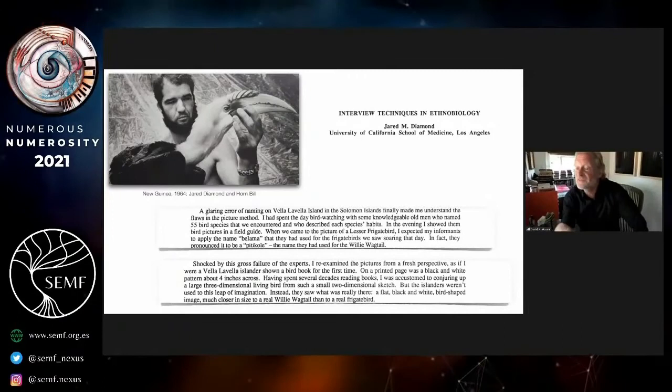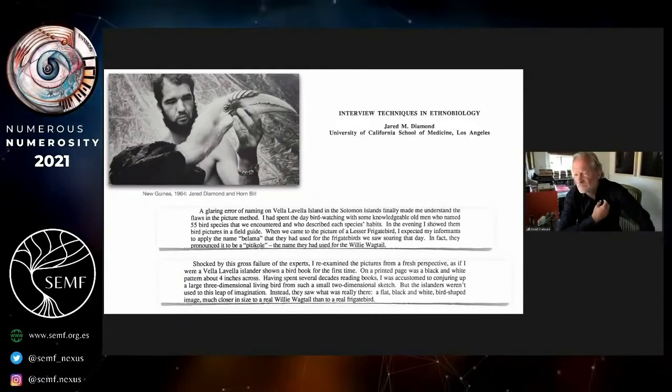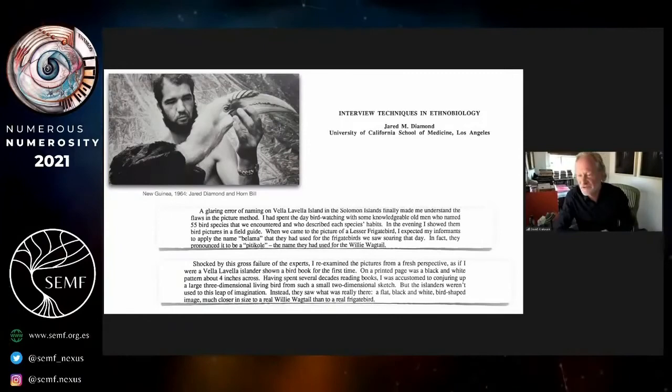But then he looked more carefully, and what he had showed them was a printed page with a black and white photograph. He himself had spent his whole career looking at black and white photographs of birds in books, but of course these individuals had not. So from their perspective, a flat black and white bird-shaped image much closer in size to the wagtail than to the frigate bird was correctly identified. This gets at this really fundamental question of your background knowledge when it comes to counting the natural world.